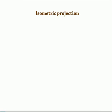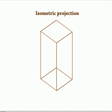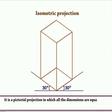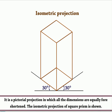Isometric projection. It is a pictorial projection in which all the dimensions are equally foreshortened. The isometric projection of a square prism is shown.